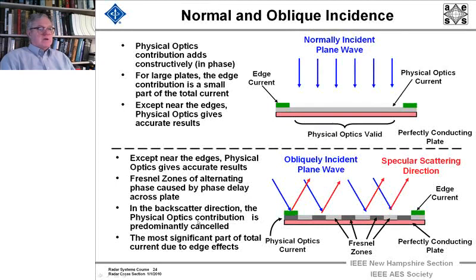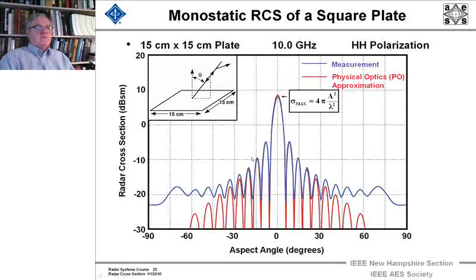And the backscatter direction, the physical optics contribution is predominantly canceled. And we end up with the Fresnel zones with the edges causing most of the effect. And we see that over here with this measurement, first in this bluish color, and then the red down here, we have the physical optics approximation calculation. We see that we get very good agreement, pretty much out to 30 degrees between measurement and the physical optics approximation.